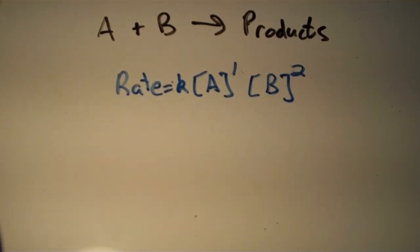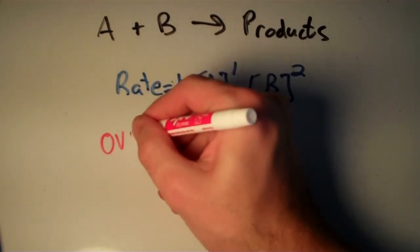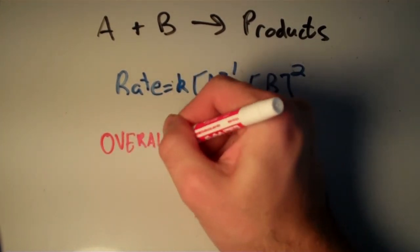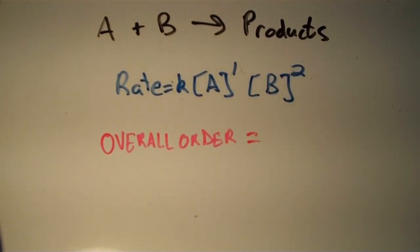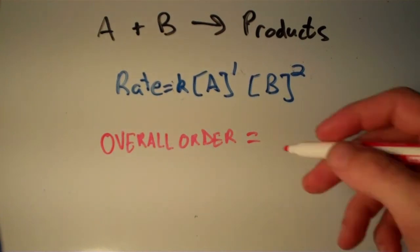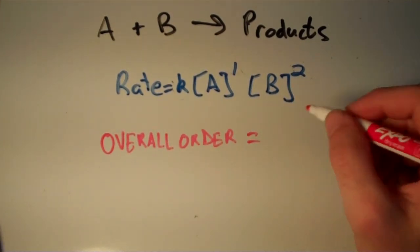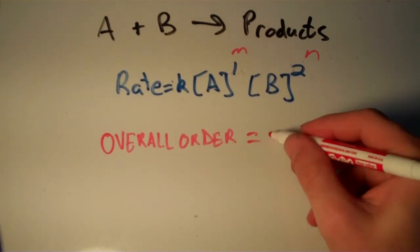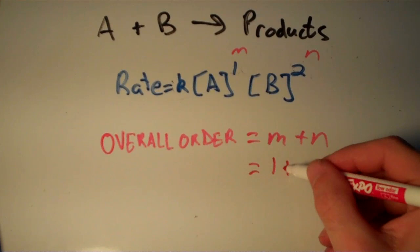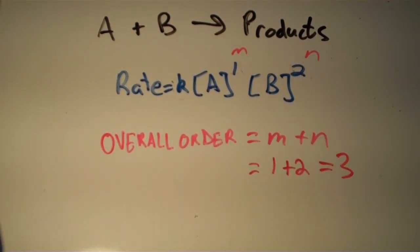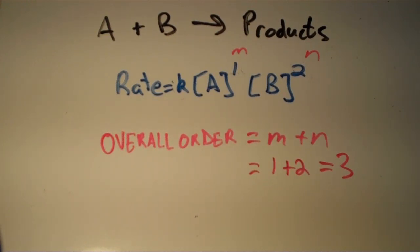There's also what we call the overall order of the reaction. It turns out that the overall order is m plus n, which in this case is one plus two, equal to three. So the overall reaction order is the sum of the orders of the individual reactants.